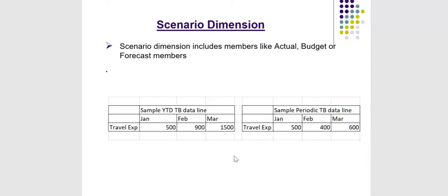In this example, I have shown the Travel Expense account. It is an expense account type and it is flow type. In the YTD trial balance, January has a value of $500, February has $900, and March has $1,500. The $1,500 means it is the YTD value as of March, which is January plus February plus March.